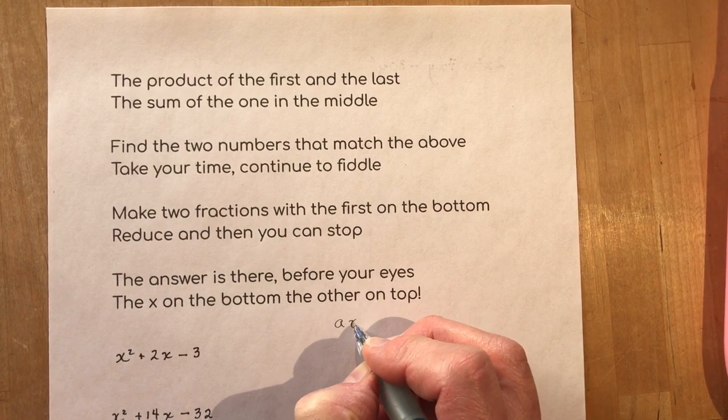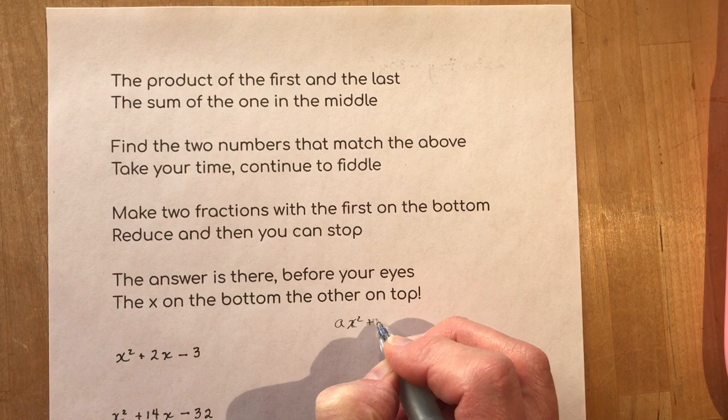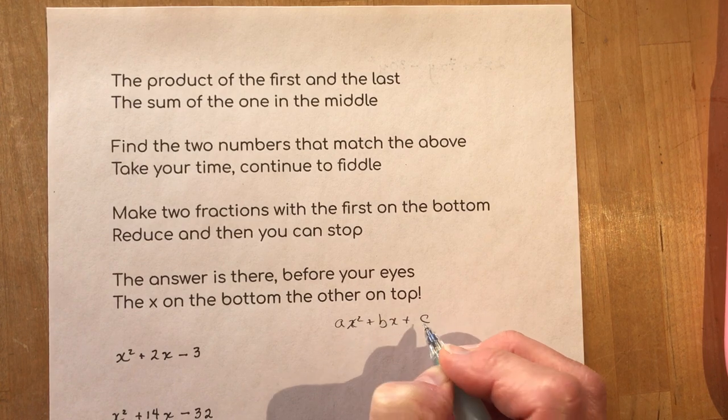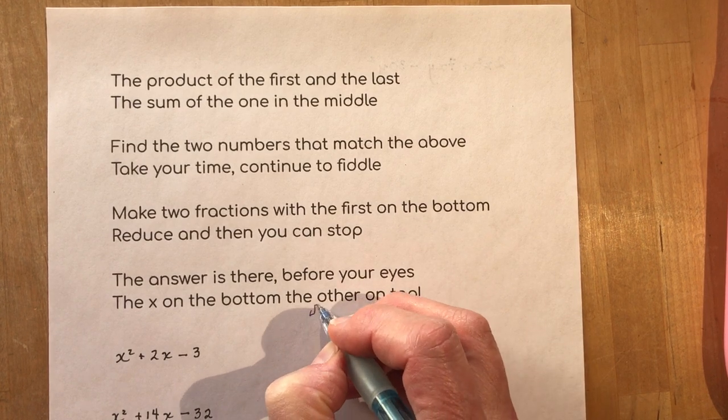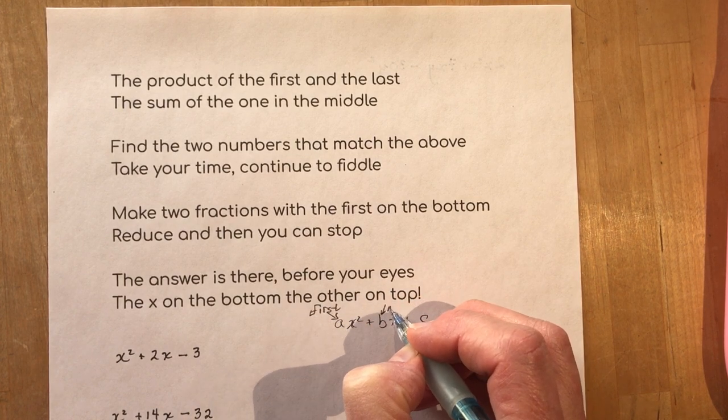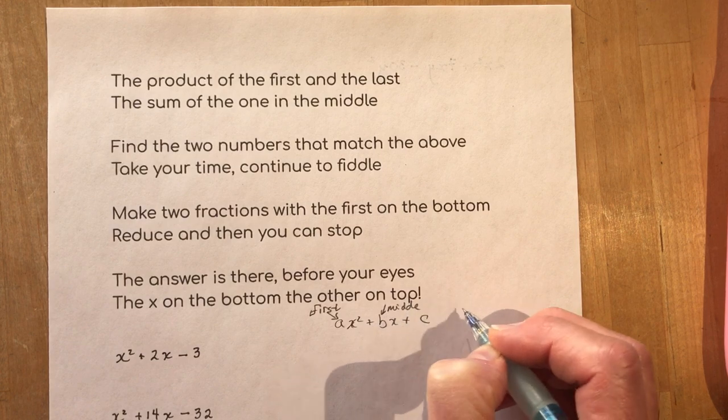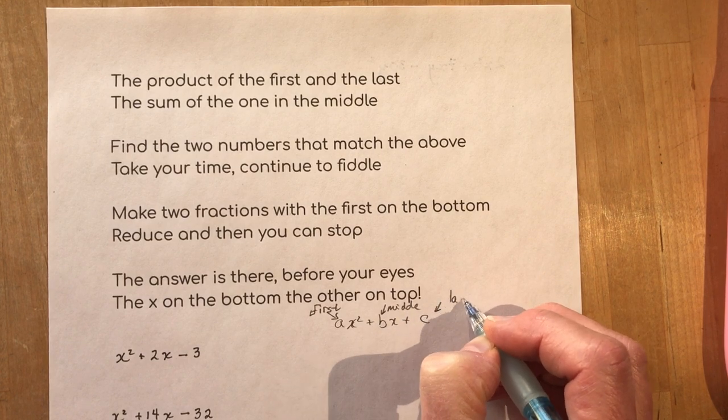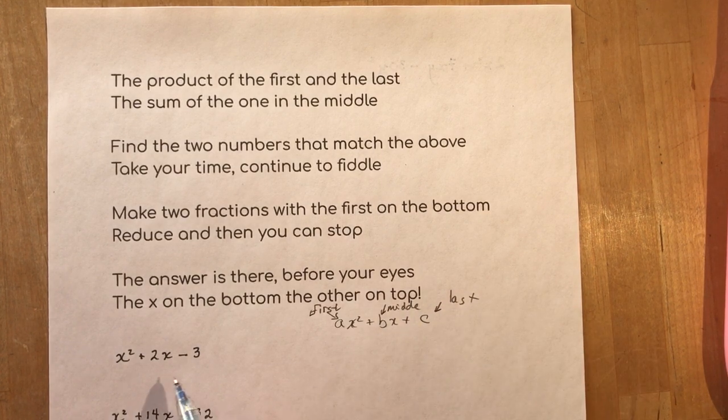When you have a trinomial ax squared plus bx plus c. This is the first. Okay this is your first number will be your a. This is the middle. That makes sense. This is the last number. Okay so follow along.